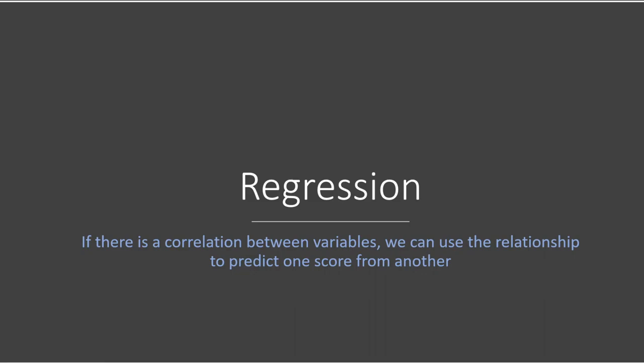We're going to talk about regression, which takes correlation to the next level. If we have a correlation between two variables, we can use that relationship to do something more useful — make a prediction about our outcome variable. Correlation and regression go hand in hand. If we've established that there is a relationship between two variables, we can use one to predict the other. This is our whole goal with social sciences: making predictions and seeing if we're right.